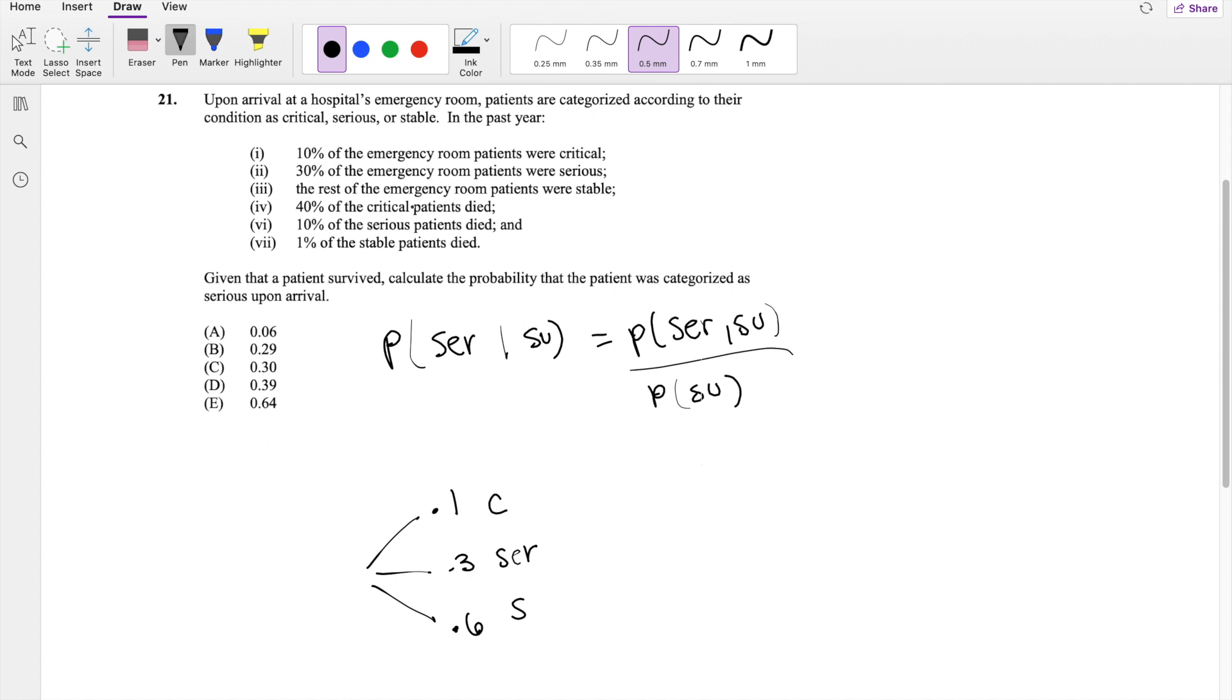40% of critical patients died, but I'm looking for when they survived. So if 40% of critical patients died, that means 60% survived. And if 10% of the patients died from serious, that means 0.9 of them survived. And lastly, stable patients, 0.99 of them survived.